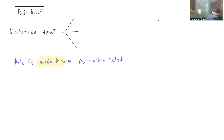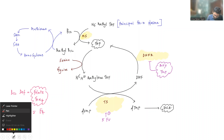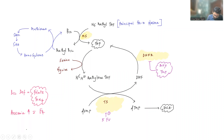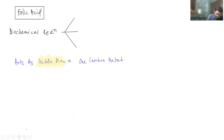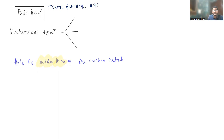The chemical name for folic acid is pteroyglutamic acid. It is called pteroyglutamic acid because it will have multiple glutamic residues.